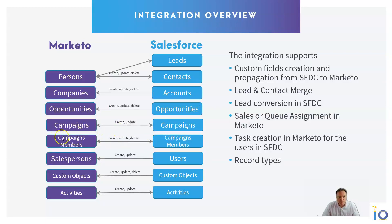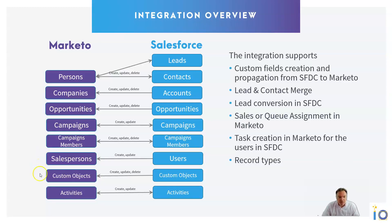For campaigns and campaign members we have a bidirectional flow, meaning we can mirror in Salesforce all the Marketo programs we have created. We will also have in Marketo all the users, meaning marketing can send emails on behalf of the sales team. All custom objects visible by the Marketo user in Salesforce will be pushed to Marketo — that's very useful for personalized customer marketing. Activities such as tasks will be pushed from Salesforce to Marketo, and selected activities will be pushed from Marketo to Salesforce — only the ones marketing wants to push.